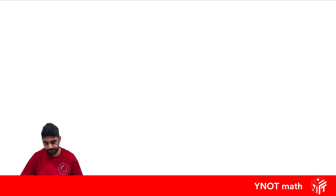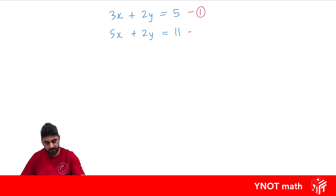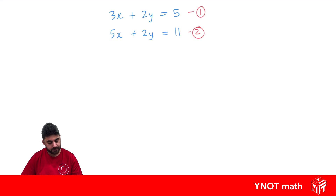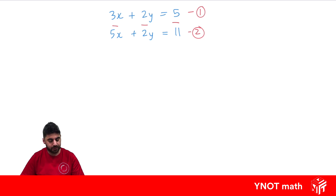Let's look at another example: 3x plus 2y equals 5, and 5x plus 2y equals 11. We call this equation 1 and this equation 2, and we want to solve for x and y. We need to look for coefficients that are the same. The x coefficients are not the same, but the y coefficients are both 2. So do we need to add or subtract these terms to eliminate them? Well, if we added them together, 2y plus 2y would be 4y and it wouldn't eliminate. So that means we need to subtract them.